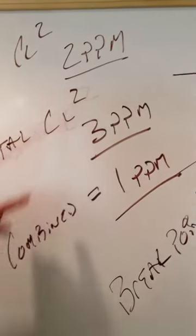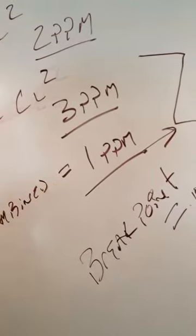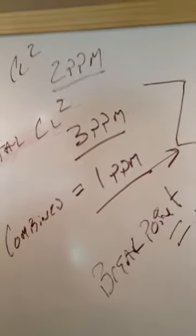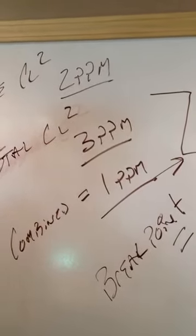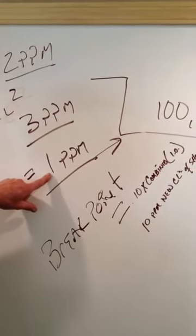Combined chlorine is calculated by subtracting free available from total, giving you 1 ppm of combined chlorine. To get rid of combined chlorine, you have to reach breakpoint chlorination. To do that, you need ten times the amount of combined chlorine.